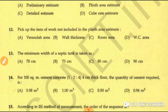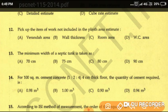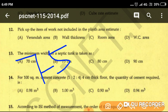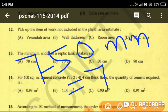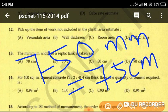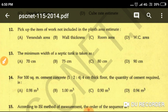Question number thirteen: the minimum width of a septic tank is taken as — the minimum width of a septic tank is always 750 millimeters, that is 75 centimeters. Option B is the correct answer.